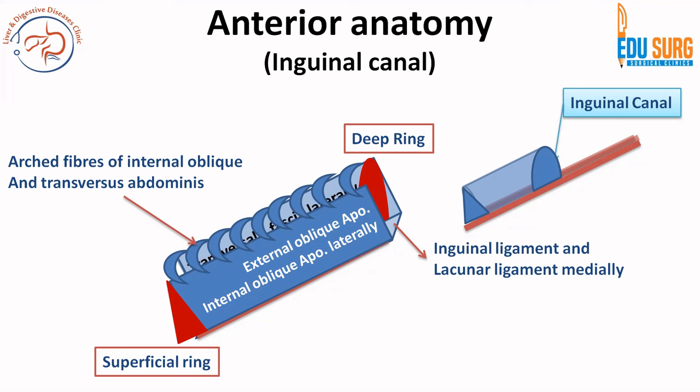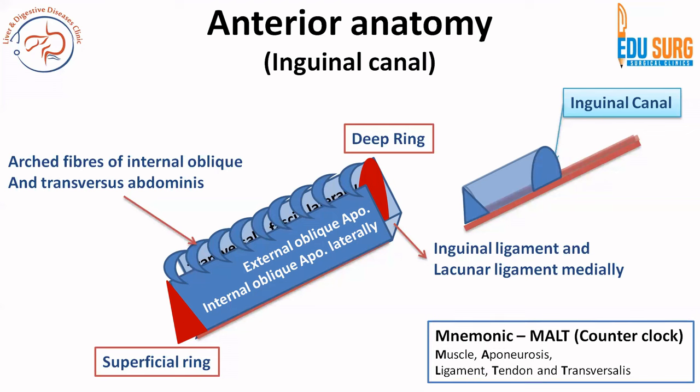The floor is formed by the internal edge of the inguinal ligament and lacunar ligament medially. The roof is formed by the arch fibers of internal oblique and transversus abdominis. From anterior to posterior: external oblique aponeurosis, then the roof which is internal oblique and transversus abdominis, and behind transversus abdominis is fascia transversalis which leads to peritoneum. For a mnemonic in counterclockwise direction — MOLD: Muscle (roof), Aponeurosis (anterior), Ligament (floor), and tendon plus transversalis (posterior).